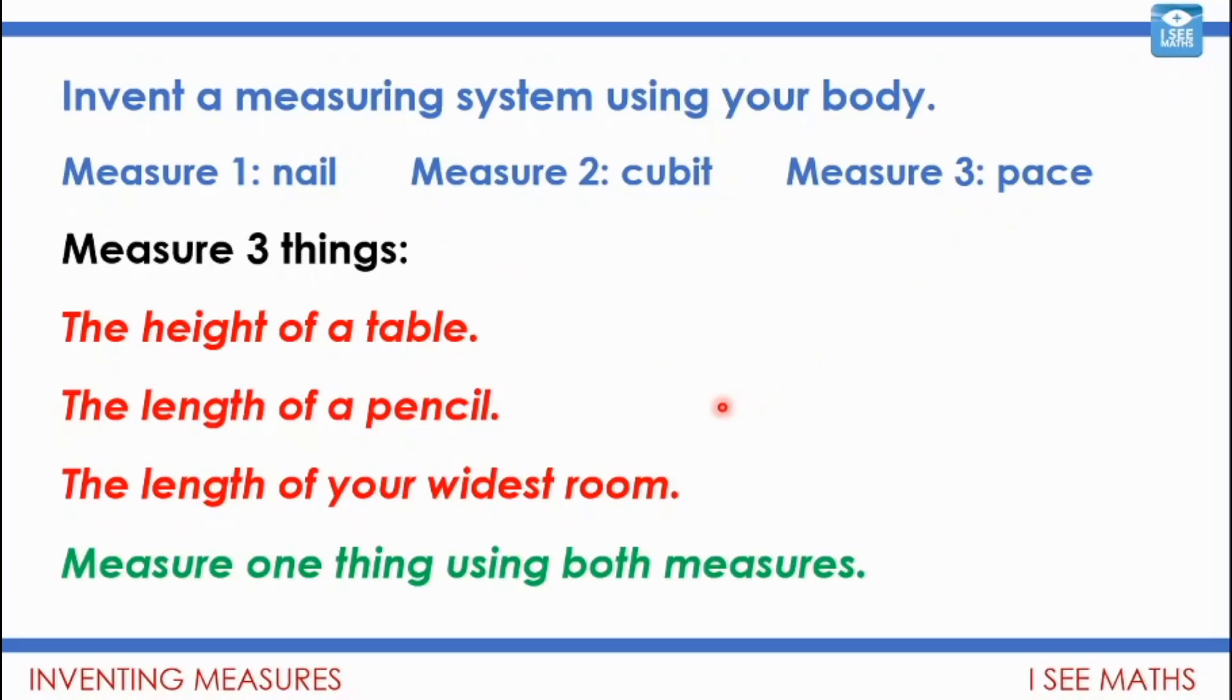Now, what I want you to do now is think of one of your things, and I want you to measure one of these three red things using both or two of your measures. So it might be you decide, well, I'm going to measure the length of a pencil, and I'm going to measure it in these two measurements. Or maybe you think, no, it's the length of my widest room, I'm going to measure it. I say in both of my measures, in at least two of your measures. So pause the video and have a go at that.